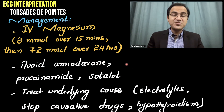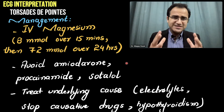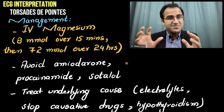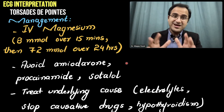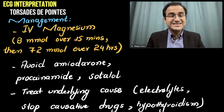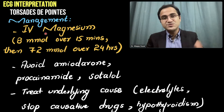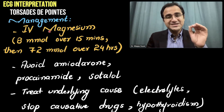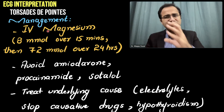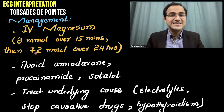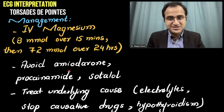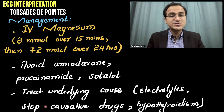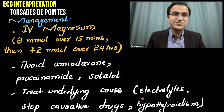The management of torsades de pointes is straightforward. If the patient is unstable — developing hypotension or losing pulses — you shock the patient, as ventricular tachycardia is a shockable rhythm. If the patient is stable without hypotension or loss of pulses, give IV magnesium — the main treatment. Magnesium sulfate is given as 8 millimoles over 15 minutes, then 72 millimoles over 24 hours. Avoid amiodarone, procainamide, and sotalol, as these can cause or worsen torsades. Treat the underlying cause, correct electrolytes, stop the causative drugs, and treat hypothyroidism.